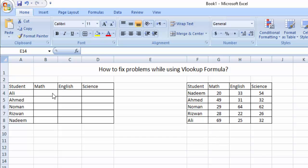Let's see, as we have two tables. Students named Ali, Ahmed, Noman, Rizwan, Nadeem. Students Nadeem, Ahmed, Noman, Rizwan and Ali. And they got marks in Math, English and Science.